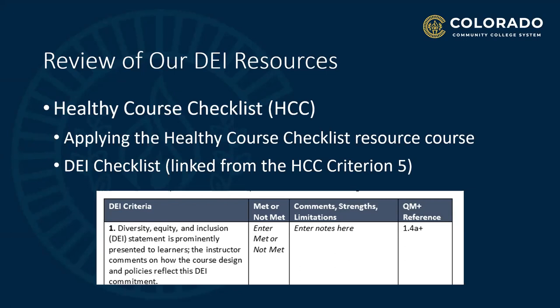To review, our specific resources to help designers and instructors build their best courses include the Healthy Course Checklist Tool, which we have expounded upon in a special course in our learning management system called 'Introduction to the Healthy Course Checklist,' and the companion resource for Criterion 5, which is the DEI Checklist. It is similar to a QM Checklist in that it lists very specific elements of a course, notes whether the criterion is met or not met, and has room for comments by a reviewer.